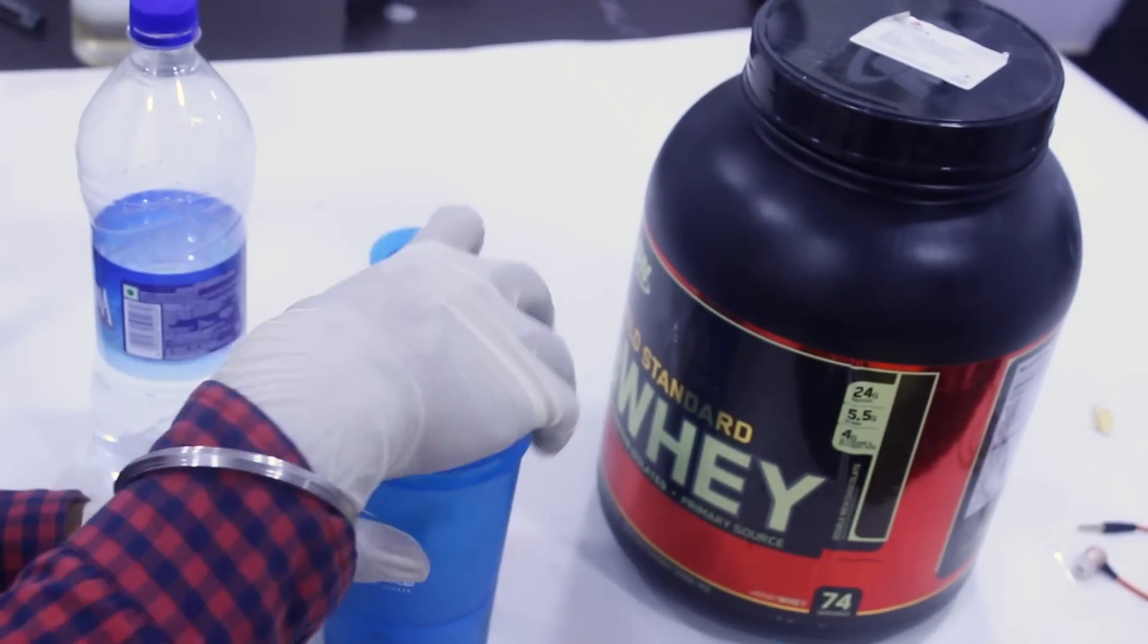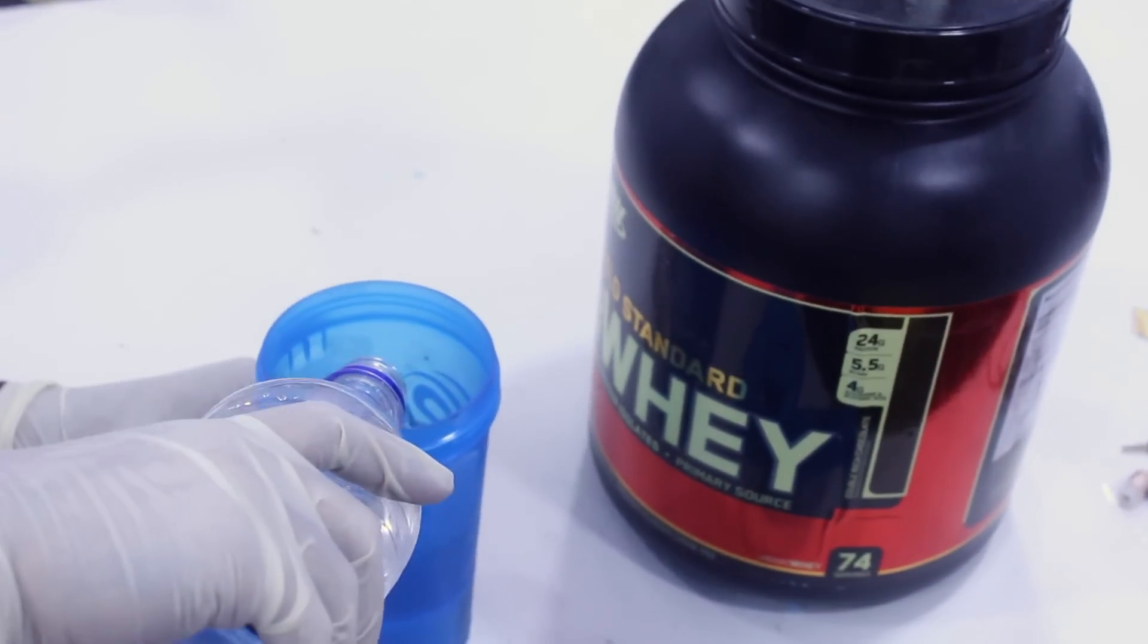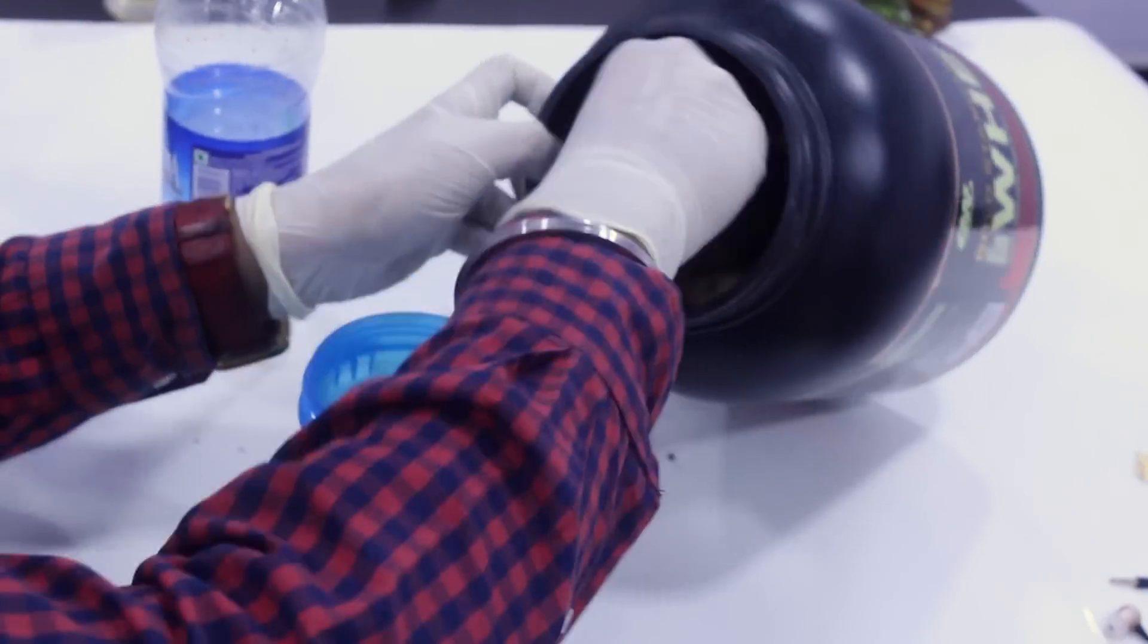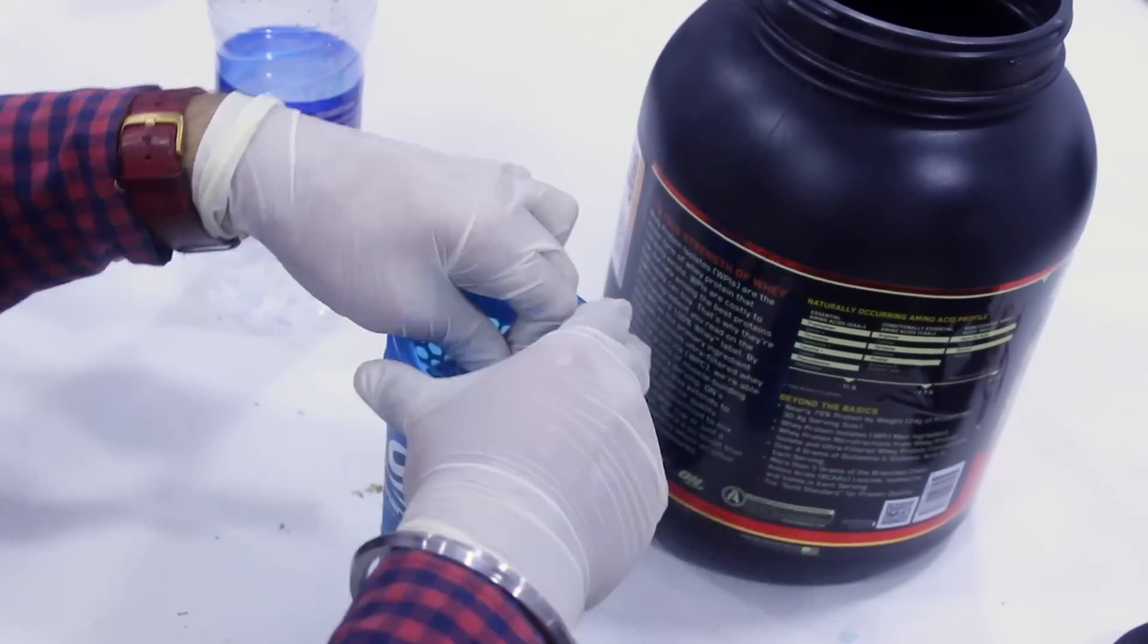After making the circuit and all the glue has dried up, the shaker is ready. Now we will add some water and some protein in it and see how quickly it mixes up.